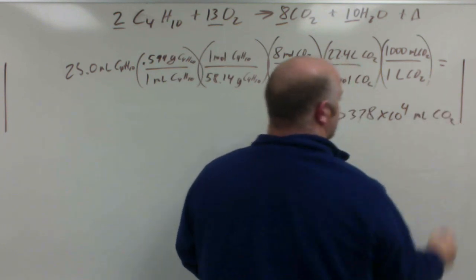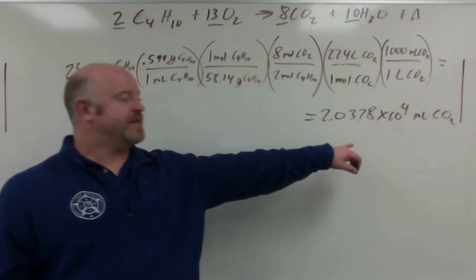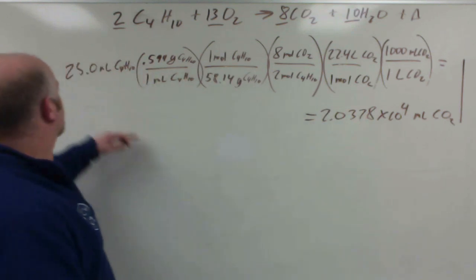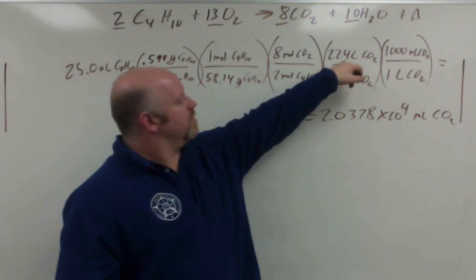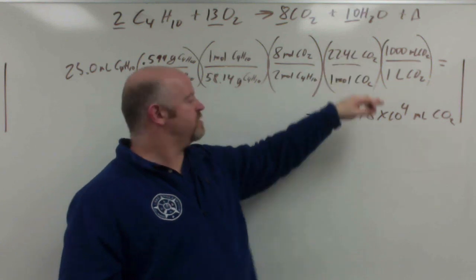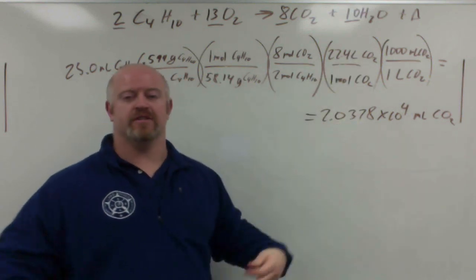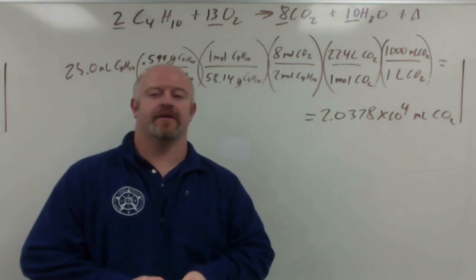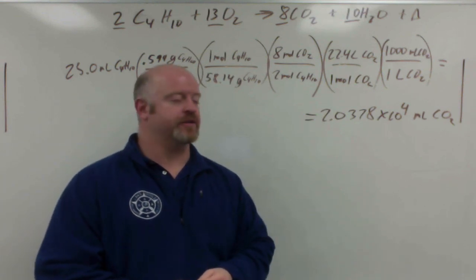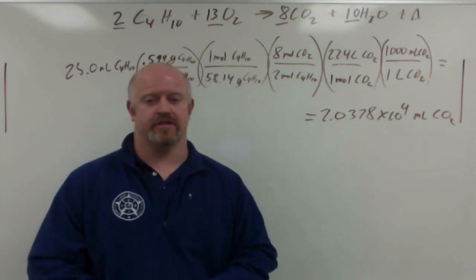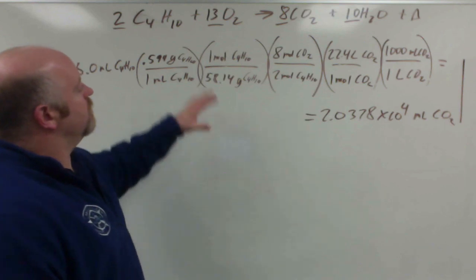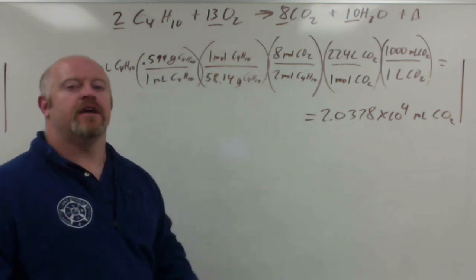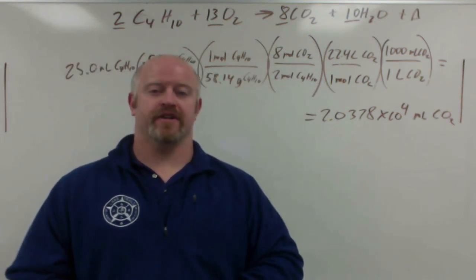And when we punch it into the calculator we get a value of 2.0378 times 10 to the 4th milliliters of carbon dioxide. Very reasonable number. We have 25 milliliters of a liquid, we know that gases are less dense, so we should expect thousands of milliliters of carbon dioxide to be produced from this. So very realistic here. Now the last step of this process is we're only 89% efficient.